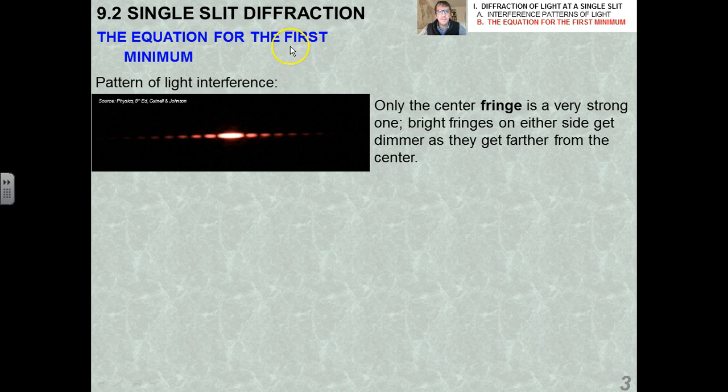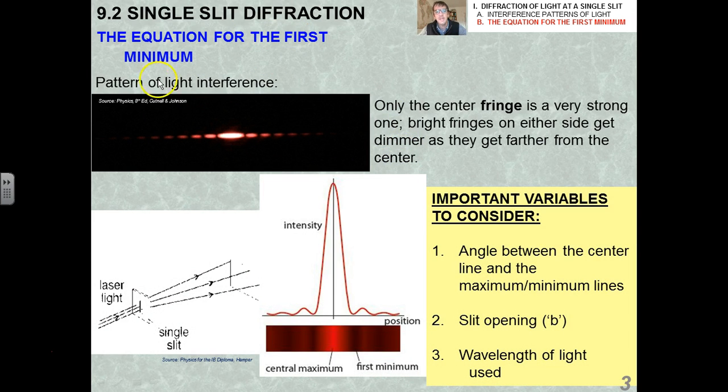So before, you only needed to qualify single-slit diffraction patterns. Now you're going to have to quantify them. We've seen all this before. We've seen with water waves how there's a diffraction pattern on the other side of the far wall. With light, you see a central maximum along this axis that goes right through the slit opening b.